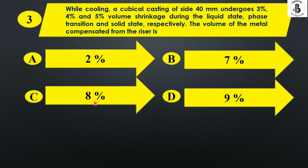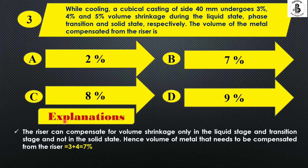The riser compensates for volume shrinkage during the solidification process. The volume of metal that needs to be compensated from the riser is approximately 3 plus 4. During the liquid state it is 3%, and during the phase transition it is 4%. So 3 plus 4 equals 7, giving an overall 7%. The right answer is Option B.